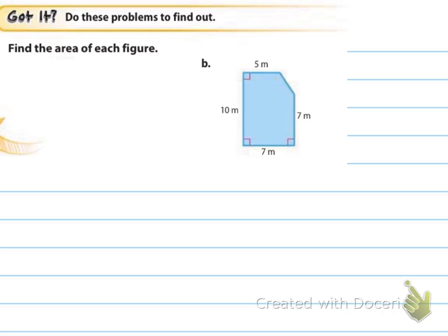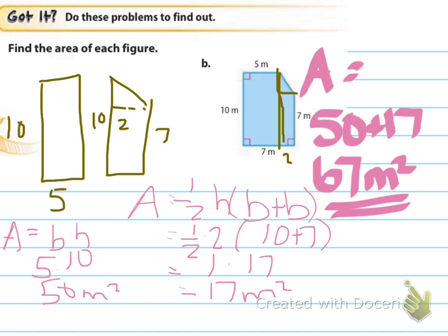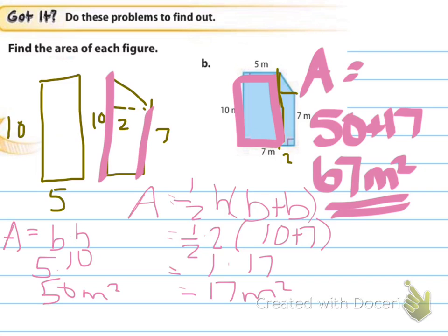Now for B — pause the video if you haven't finished B yet. The answer for B: I separated it into a rectangle which was 10 by 5, and then the trapezoid, which was 10 by 7 with a height of 2. I figured that 2 out because if one section was 5, the remaining part had to be 2 to make that side 7. My total area was 67 meters squared.